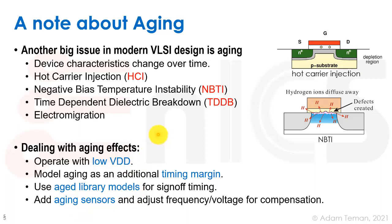Ways to deal with aging include operating at lower VDDs, using aging timing margins, using aged library models for sign-off timing, and adding aging sensors. The most common approach is to characterize your library with aging effects — assuming certain current, voltage, and temperature conditions, measuring HCI and NBTI effects, incorporating them into a .lib file, and running static timing analysis with those aged corners.